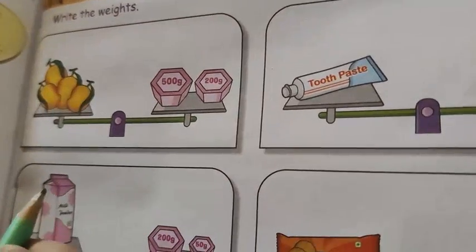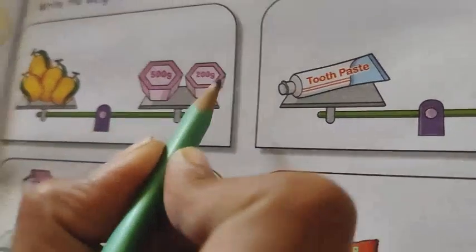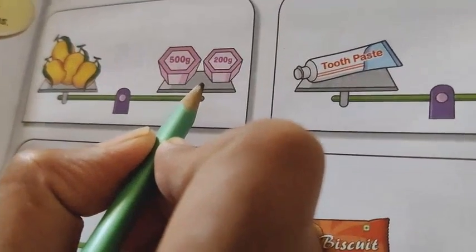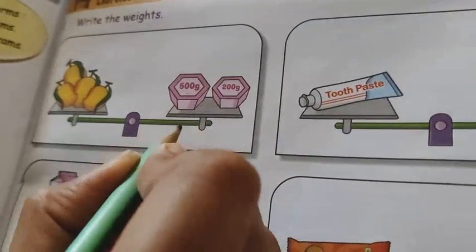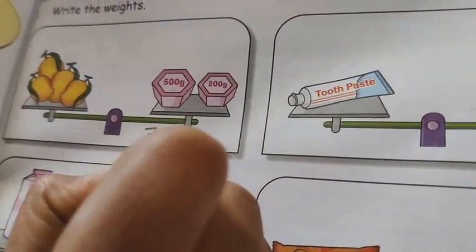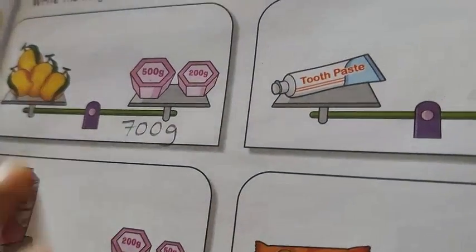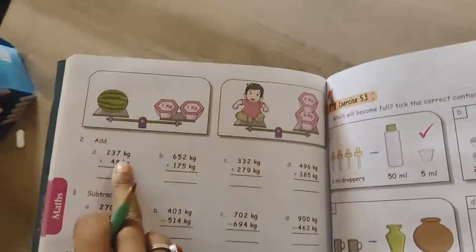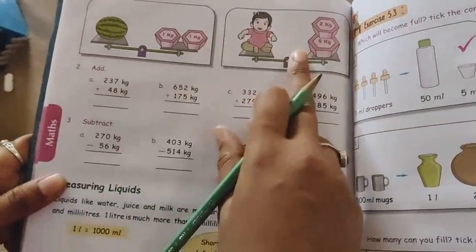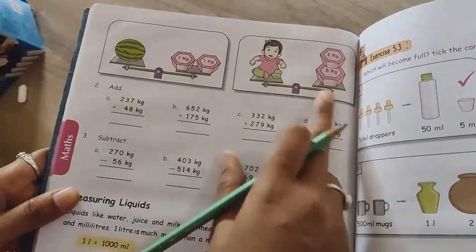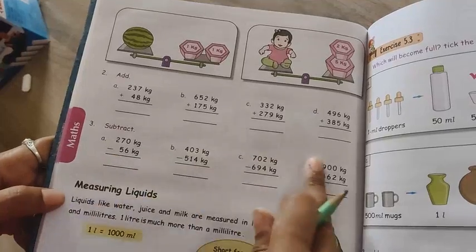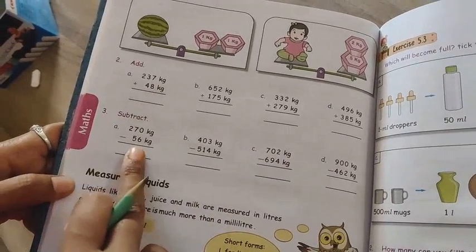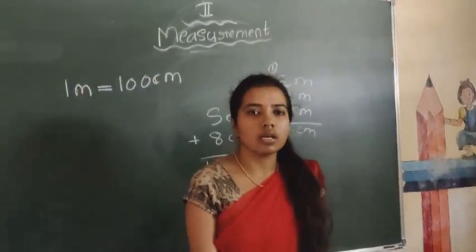Understood? Here also — watermelon — see, there are additions and subtractions here till the end. You have to solve them all. Thank you.